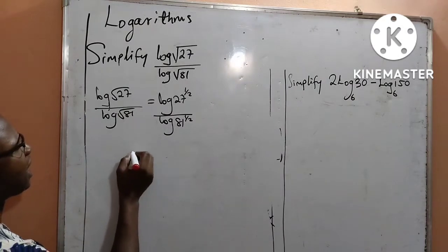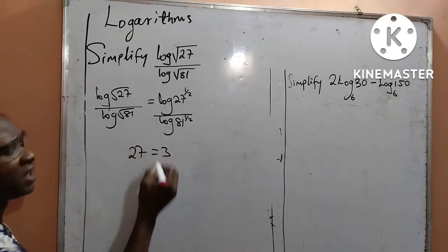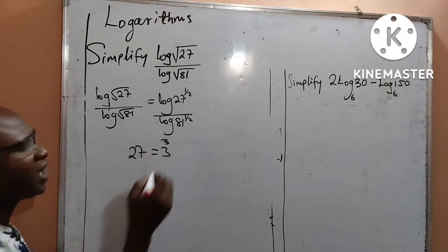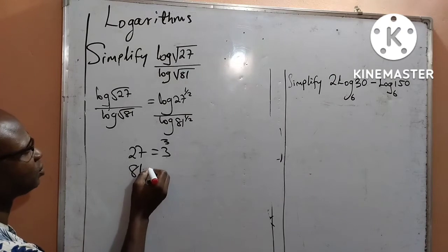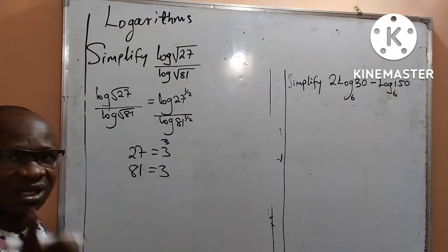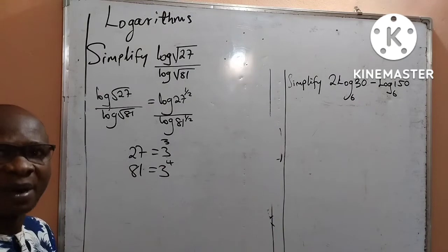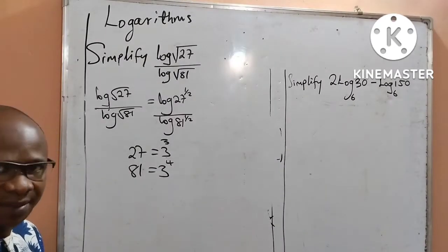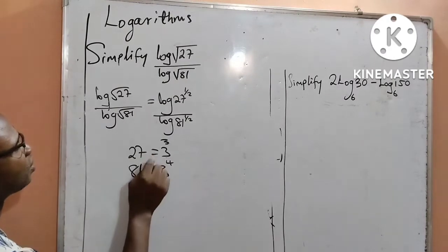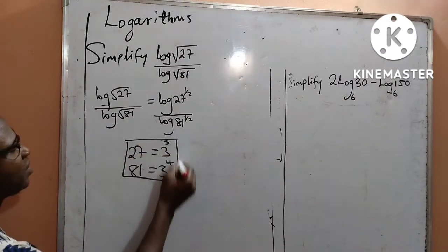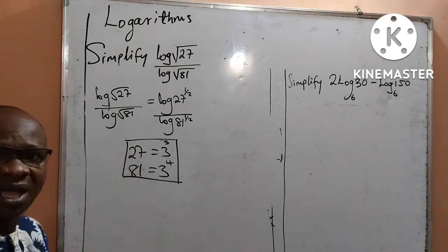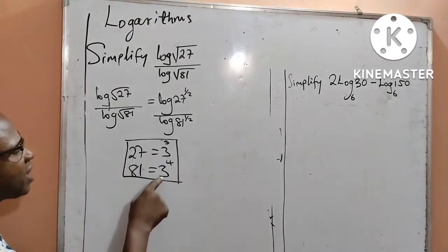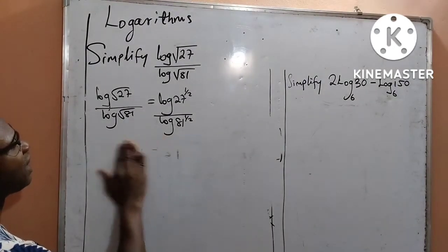The next thing I will do — I want this 27 to be written in base 3, and it is the same as 3 raised to power 3. And also, I want 81 to be written in base 3. It will give me 3 raised to power 4, meaning 3 times 3 times 3 times 3, four times. So anywhere I see 27, I will put 3 raised to power 3, and where I see 81, I will express it as 3 raised to power 4.